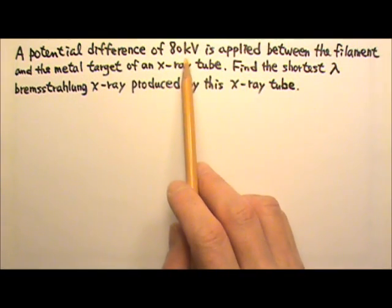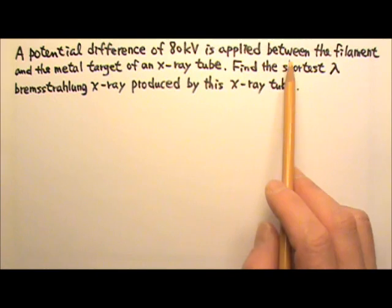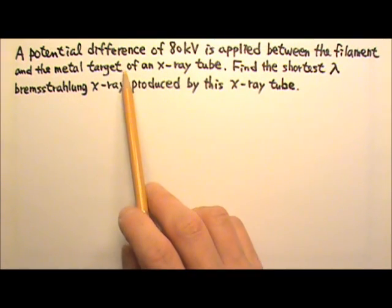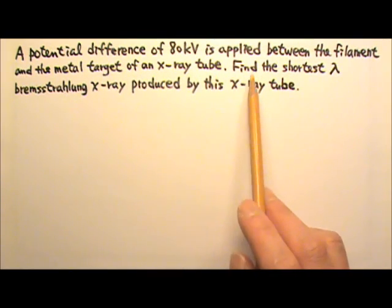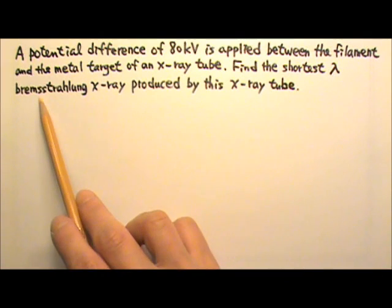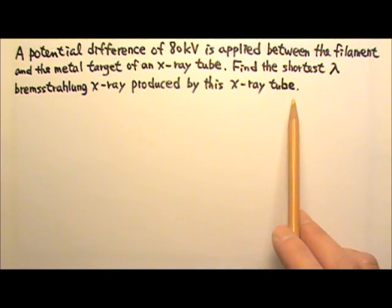A potential difference of 80 kV is applied between the filament and the metal target of an X-ray tube. Find the shortest wavelength Bremsstrahlung X-ray produced by this particular X-ray tube.